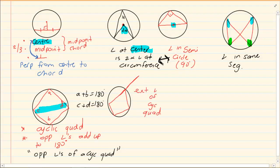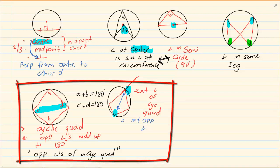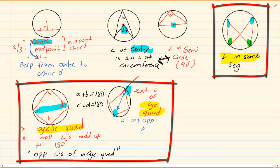The next theorem is the exterior angle of a cyclic quad. The outside angle is equal to the interior opposite angle — it means jumping in and then going opposite. These two theorems are specifically linked to cyclic quads. Angles in the same segment can also be used to prove that something is a cyclic quad, giving you three theorems regarding cyclic quads.